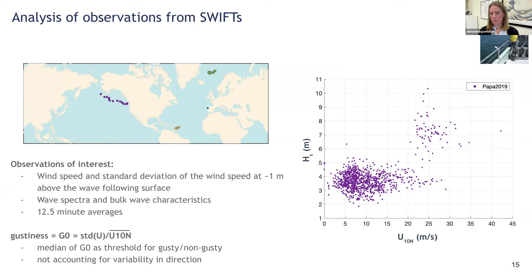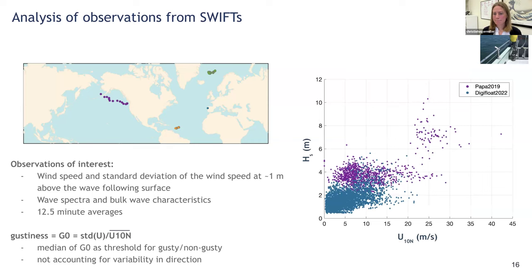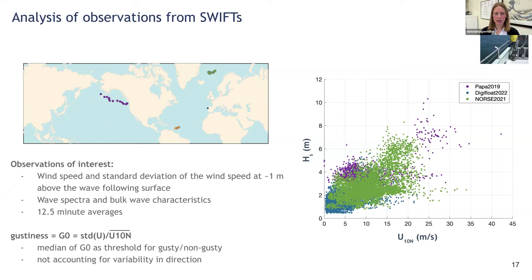These data are diverse. Looking at the PAPA 2019 dataset, we see pretty large wind speeds during this experiment, but also a lot of swell conditions. The digifloat data was from a continental shelf mooring for a couple of months, with pretty small waves and small winds for a large majority of the dataset. The NORS 2021 experiment observed a wider variety of conditions, including some really large storm events. The ATOMIC cruise in the tropical North Atlantic had pretty low wind speeds and wave heights as well.